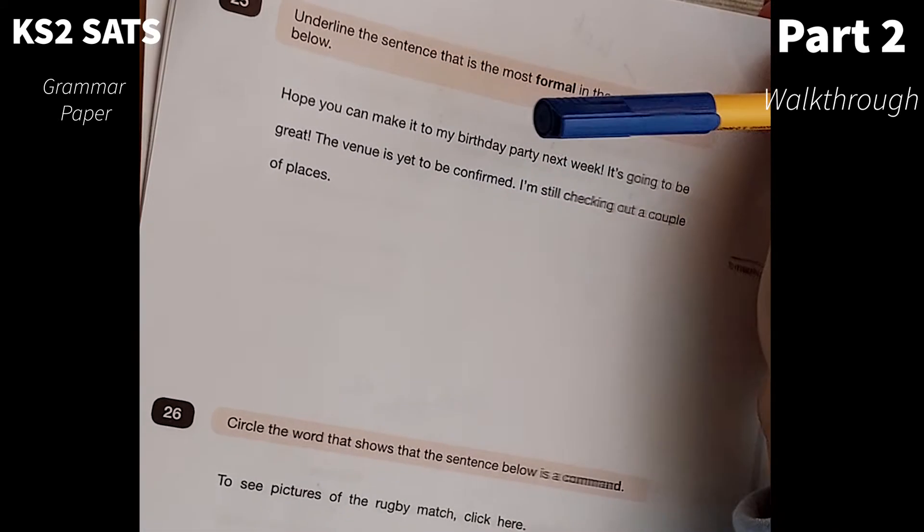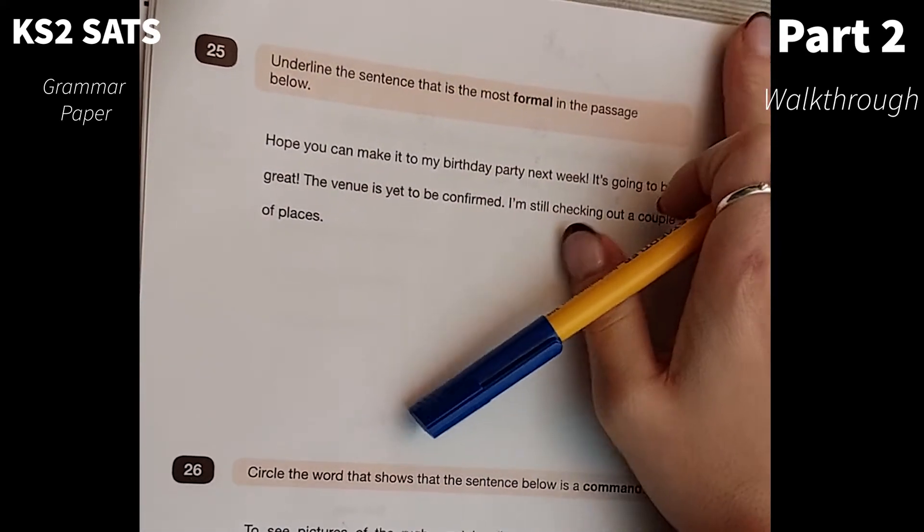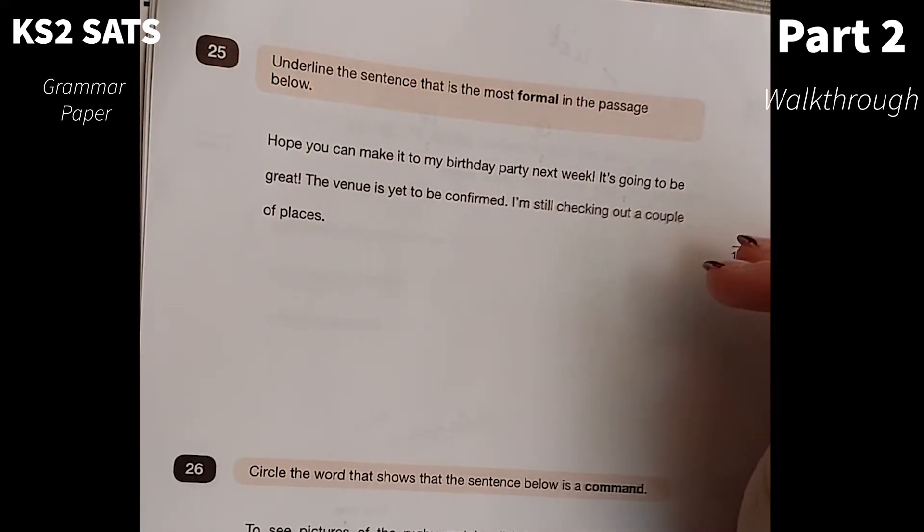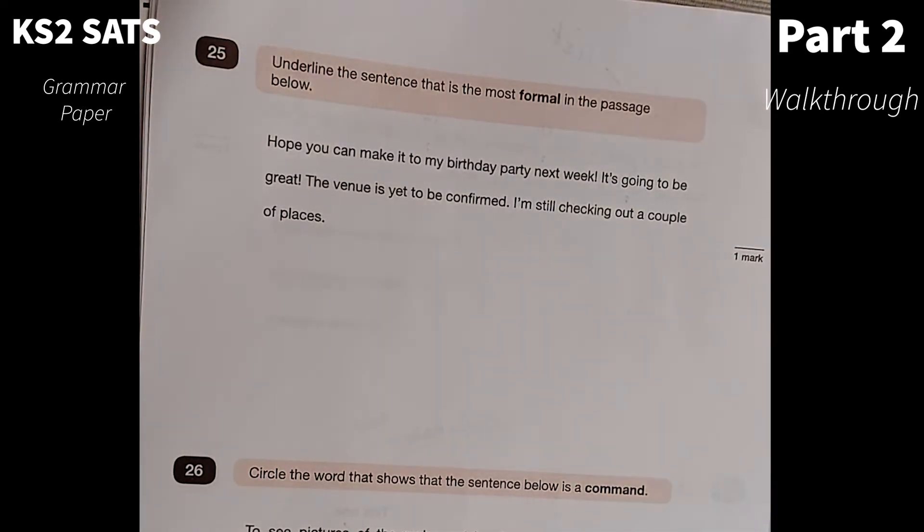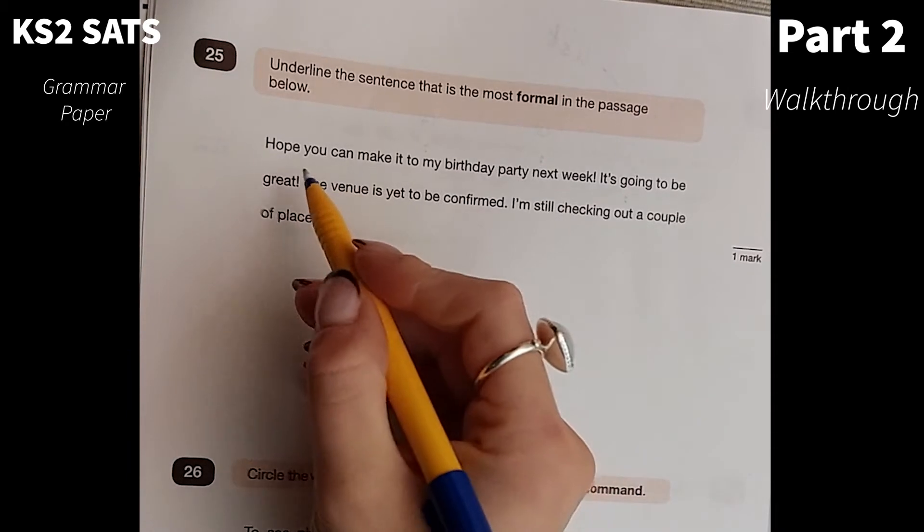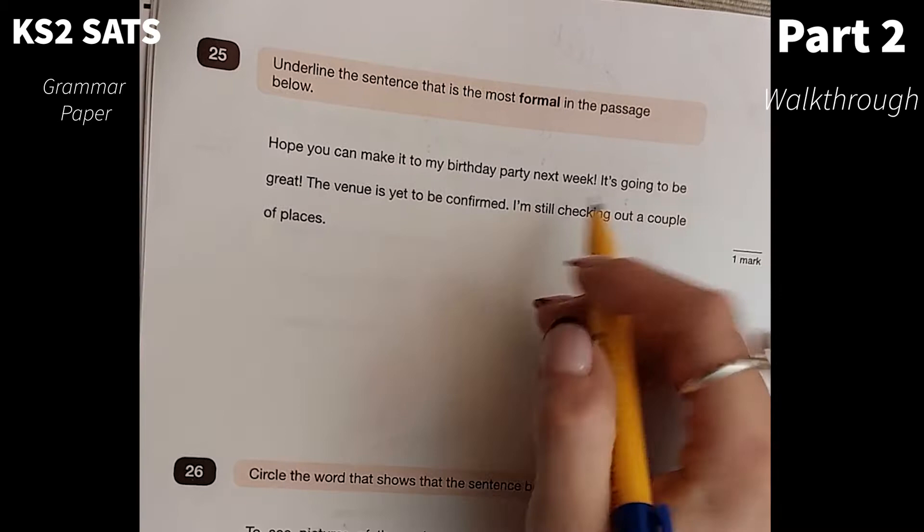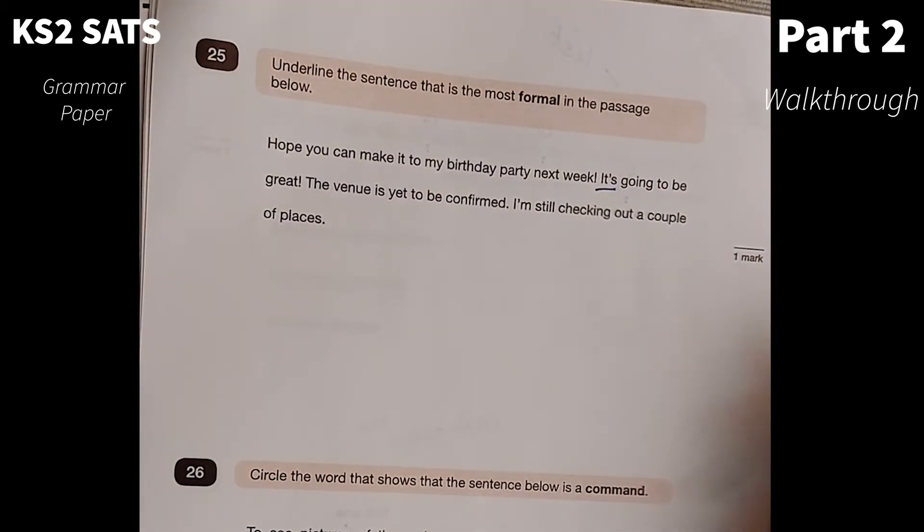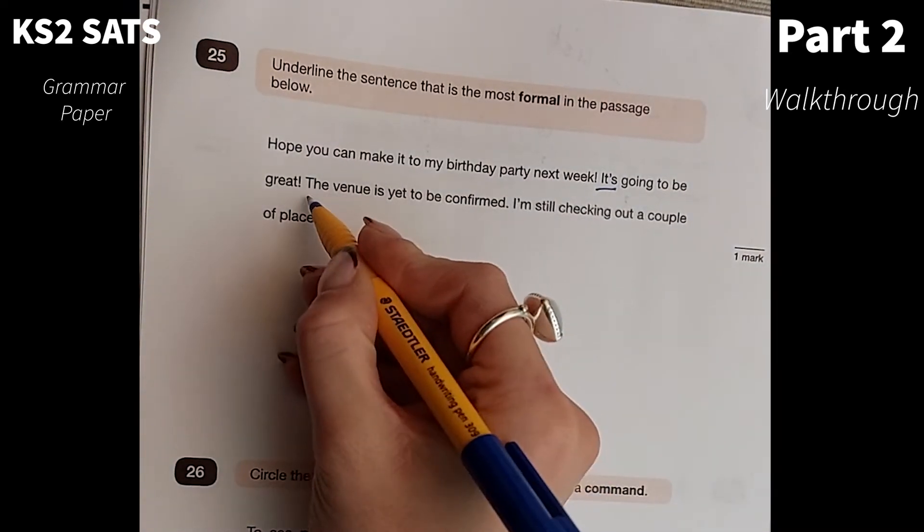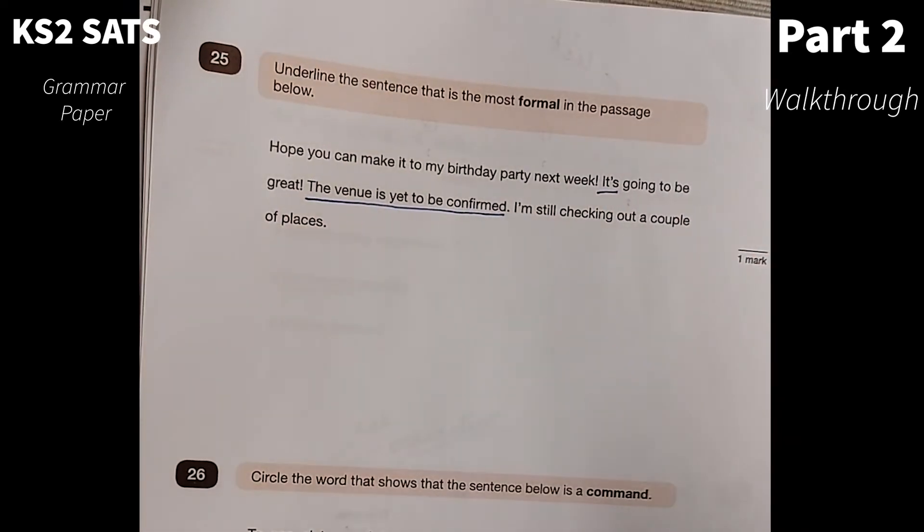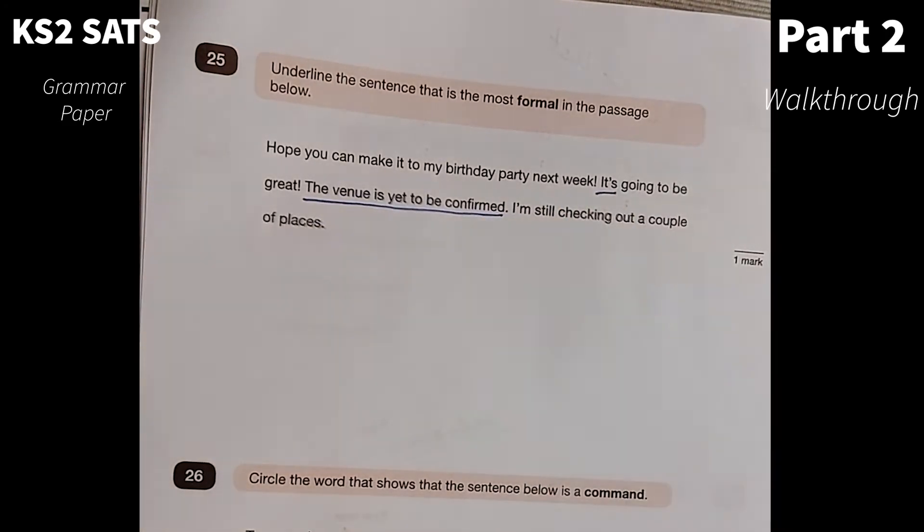Number 25. Underline the sentence that is most formal in the passage below. Hope you can make it to my birthday party next week. It's going to be great. The venue is yet to be confirmed. I'm still checking out a couple of places. If I look at the first sentence, there's no contractions there, but it is still quite chatty. The second sentence, I've got my contraction there. The venue is yet to be confirmed, I would say is the most formal there. I'm still checking out a couple of places while I've got a contraction here.